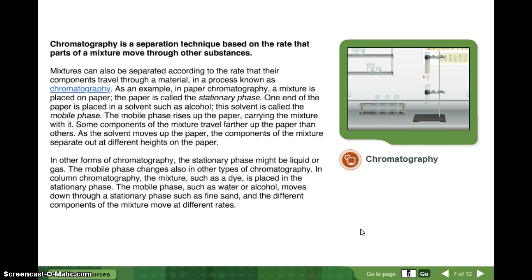Another type is chromatography. Chromatography is a separation technique based on the rate that parts of a mixture move through other substances. Mixtures can also be separated according to the rate that their components travel through a material, in a process known as chromatography. As an example, in paper chromatography, a mixture is placed on paper. The paper is called the stationary phase. Stationary meaning it doesn't move. One end of the paper is placed in a solvent, such as alcohol. This solvent is called the mobile phase, because, you guessed it, it moves. The mobile phase rises up the paper, carrying the mixture with it. Some components of the mixture travel farther up the paper than others. As the solvents move up the paper, the components of the mixture separate out at different heights on the paper.